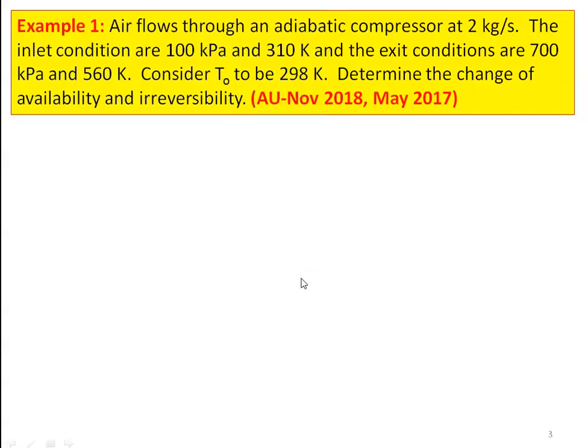We take problems only from the Anna University question paper. Example number one, from the November 2018 and May 2017 question paper: air flows through an adiabatic compressor at 2 kilograms per second. The inlet conditions are 100 kilopascal and 310 Kelvin; exit conditions are 700 kilopascal and 560 Kelvin. Consider surrounding temperature T0 to be 298 Kelvin. Determine the change of availability and irreversibility of the process.